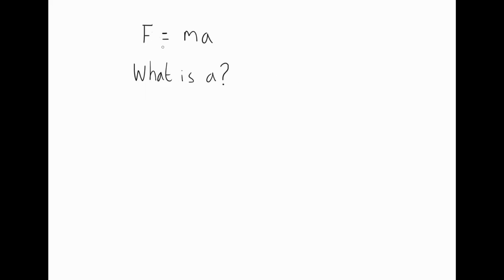Here's another example. The equation here says F equals M multiplied by A and our job is to find out what A is. Well A has been multiplied by M, so the way to undo that is to divide by M.